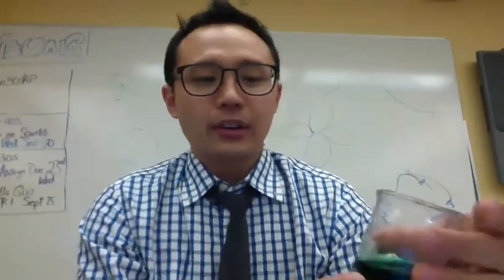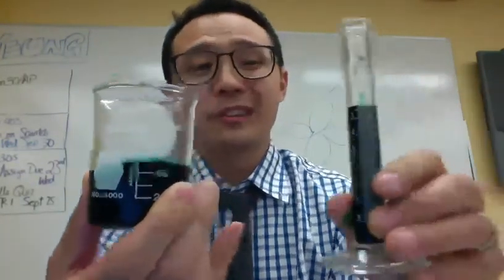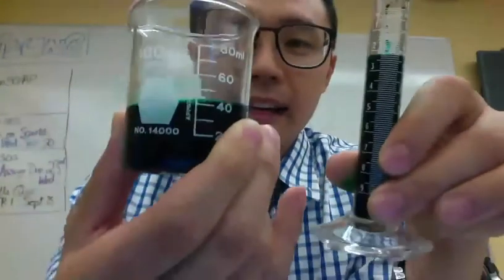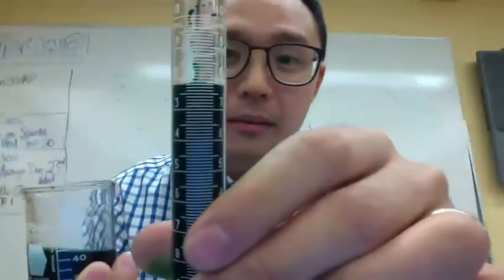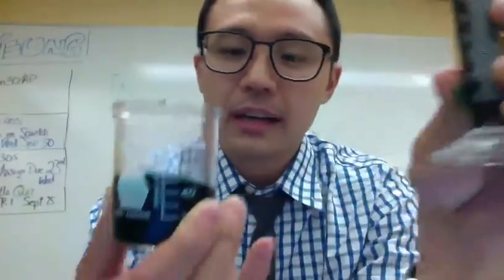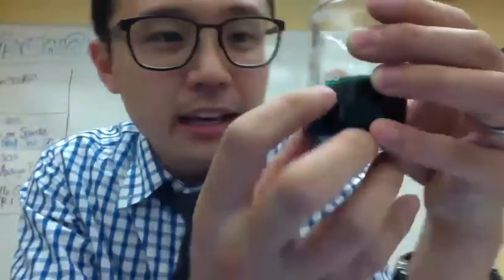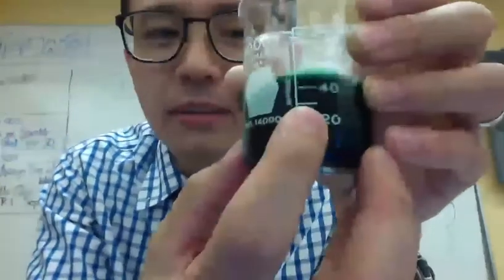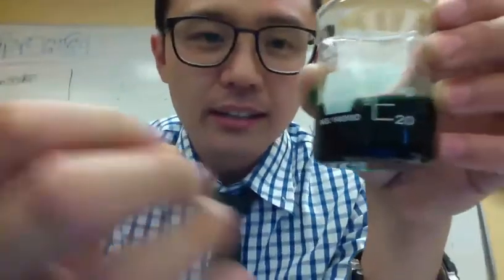This is a video about significant digits. To start off, you can see I have a beaker here with some green solution — basically food coloring — and this smaller graduated cylinder. The smaller graduated cylinder is a lot more precise in its measurements because there are smaller increments we can read, whereas with this beaker, one person could say it's about 38 milliliters and another might say about 40.